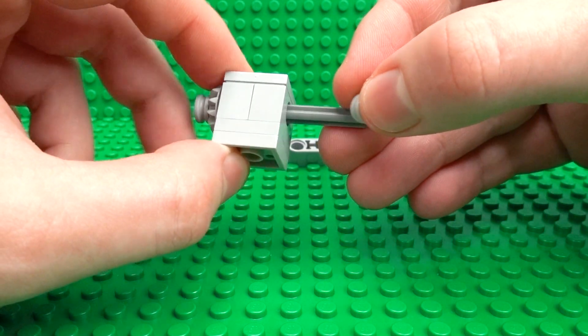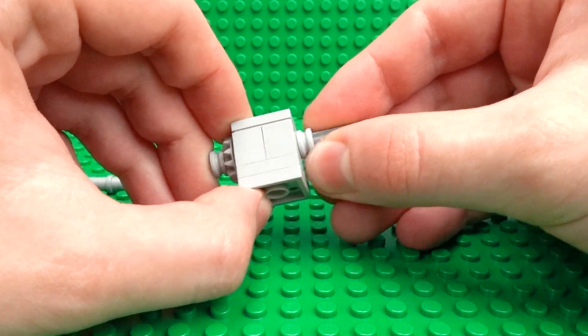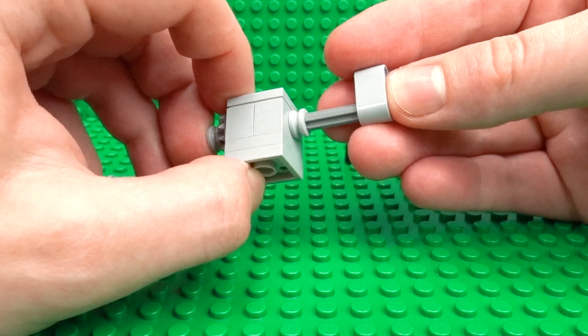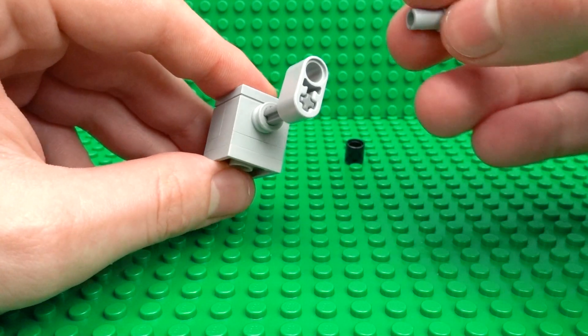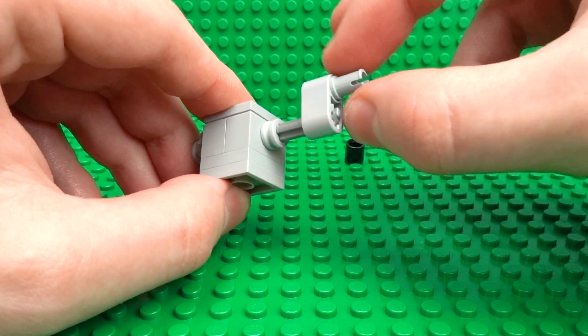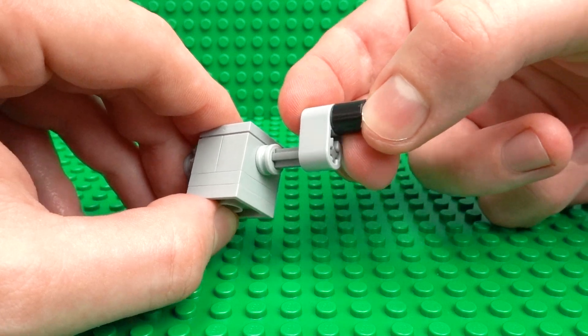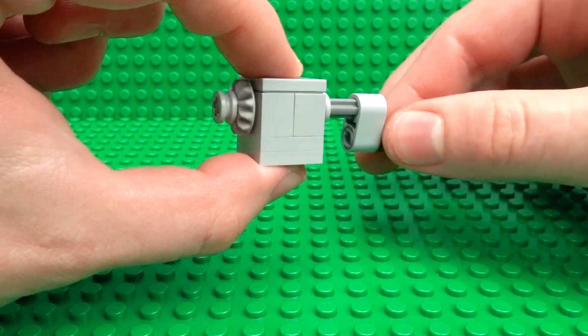Then a second half Technic bush just to keep that in place over at the back there. And then to create a little handle to make it easier to hold, just attach this Technic piece, a frictionless 1x1 pin and another little handle. And that will allow you to spin it and create the same effect as the wind-up motor.